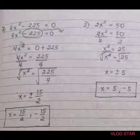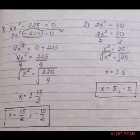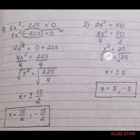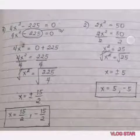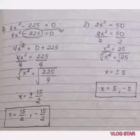And then we divide it by 2. 2x² over 2 is x² and then 50 over 2 is 25.